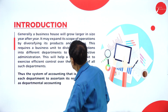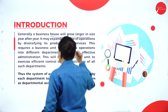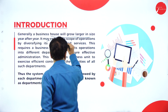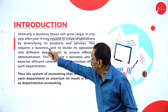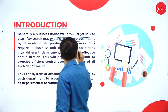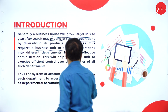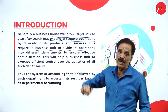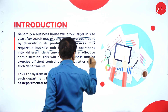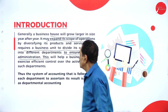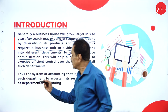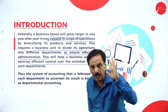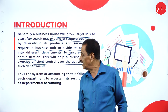Generally a business house will grow larger year after year. It may expand the scope of operations by diversifying its products and services. This requires a business unit to divide its operations into different departments. The entire organization is divided into different departments to ensure effective administration and to exercise efficient control. Each unit is called a department.